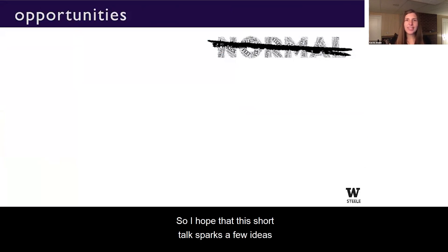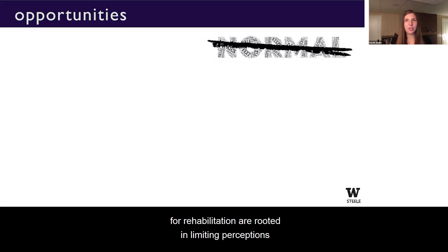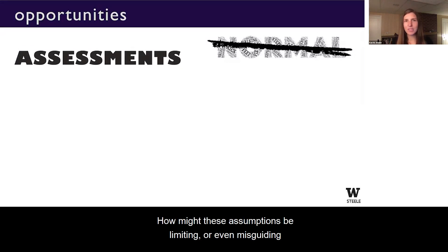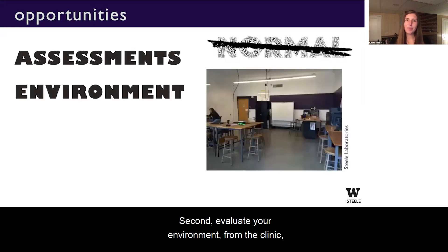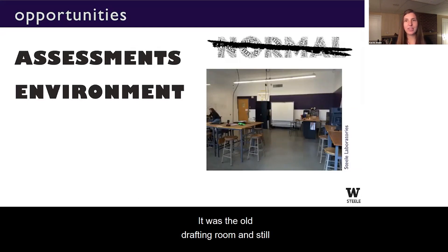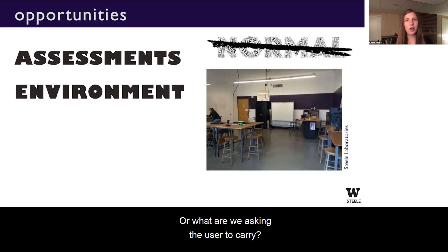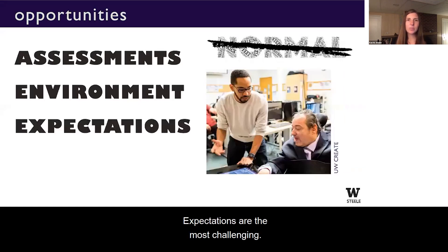I hope this short talk sparks ideas and discussions, especially related to how our assessments, environments, and expectations for rehabilitation are rooted in limiting perceptions of normalcy. For action items: first, consider how the assessments and metrics you use on a daily basis are tied to assumptions of normalcy, and how these assumptions might be limiting or even misguiding your work. Second, evaluate your environment — from the clinic to the research lab to your daily commute. See how many accessibility challenges you can identify, and reach beyond the physical space to the technology and tools you use in provision. How are we asking the user to adapt? Or what are we asking the user to carry?